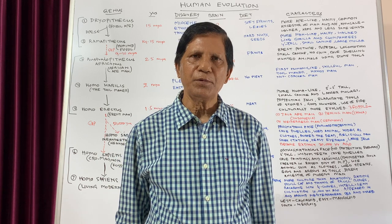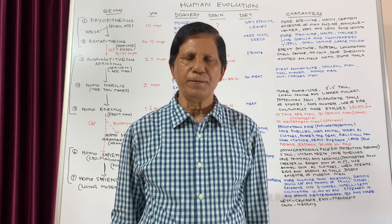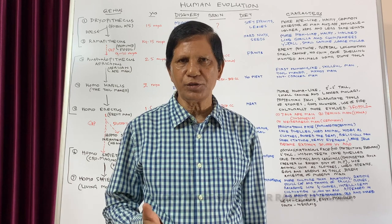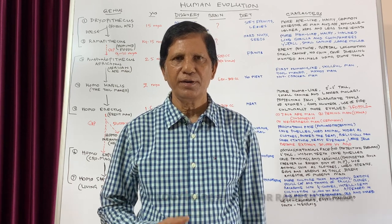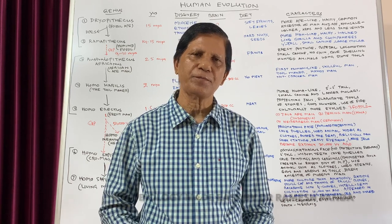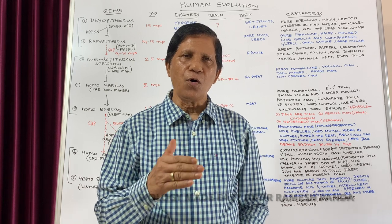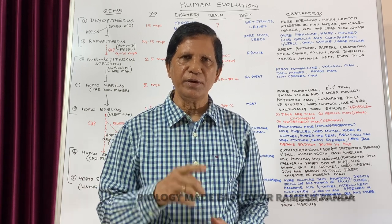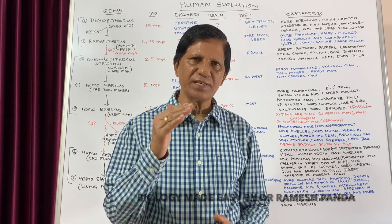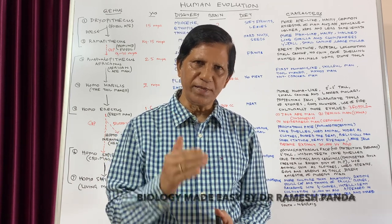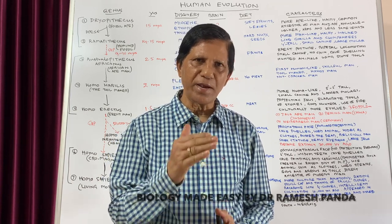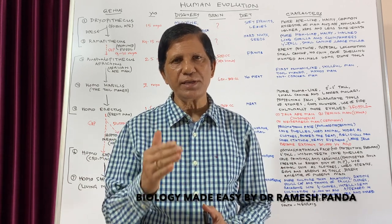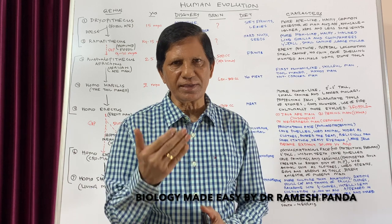Friends, welcome to Biology Magazine. Today we will discuss the last part of this evolution chapter, that is human evolution. All members of human beings belong to the species Homo sapiens, which means 'man who is wise.' But how did the origin and evolution of human beings take place?